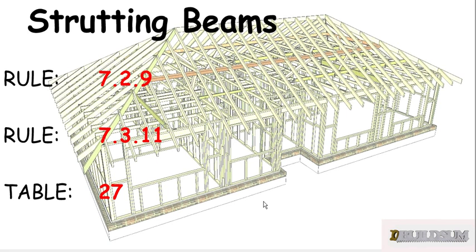With respect to strutting beams, we need to look at Rule 7.2.9, Rule 7.3.11, and Table 27. If you have a combined hanging and strutting beam you need to look at a separate table, and if you have a combined counter and strutting beam there are different tables that pertain to those. The rules aren't much different, but the tables in particular are different, so make sure you're reading the right table for the particular beam that you are using.